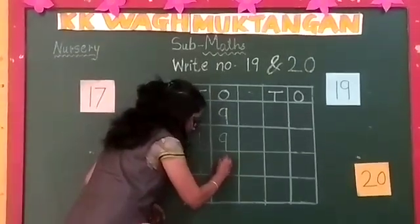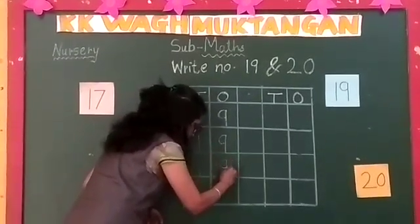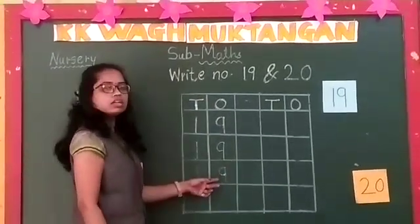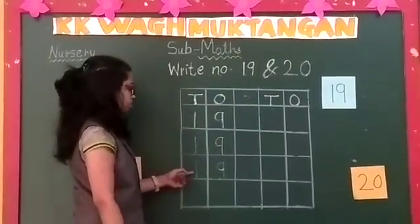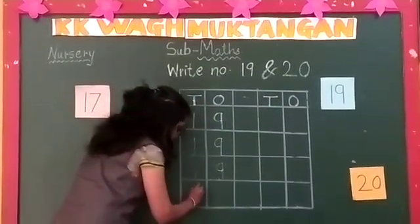And number 9 — right curve and standing line. This is number 9 in the 1's column. 10 and 9, 19.